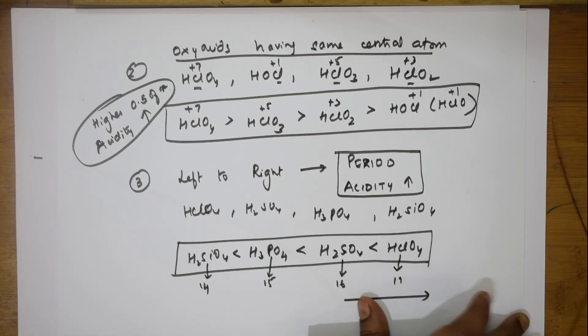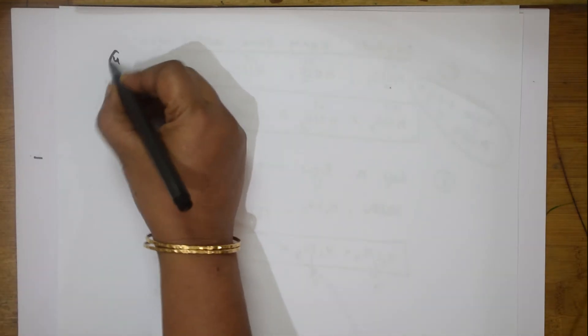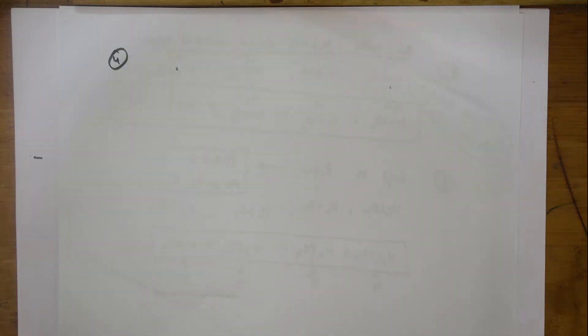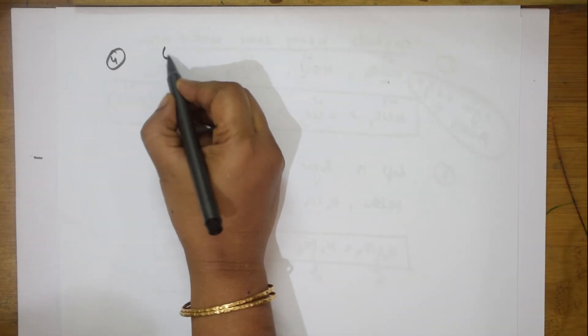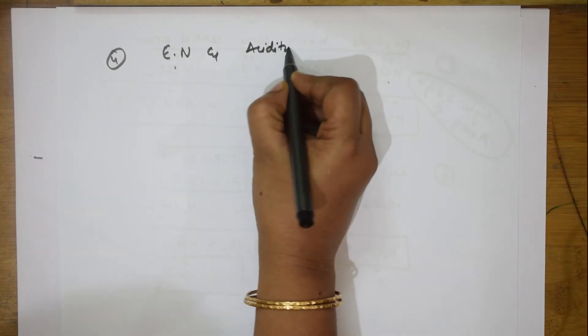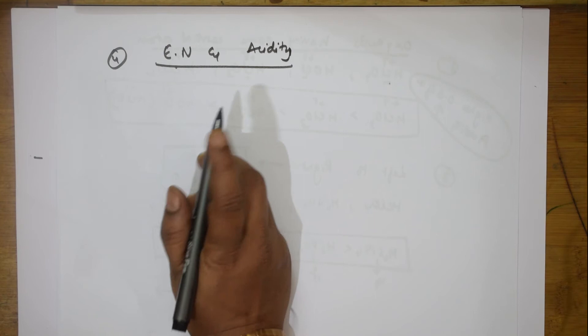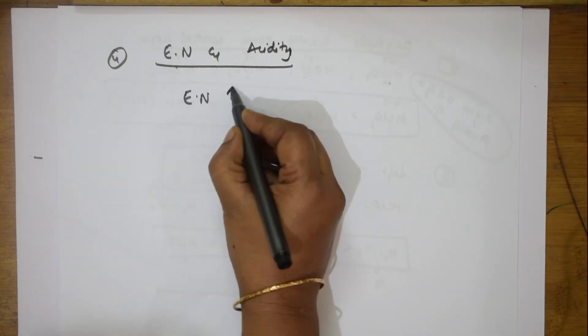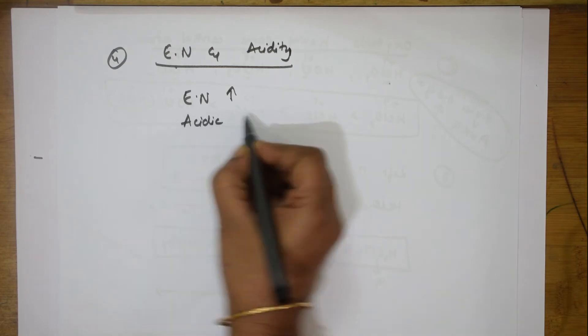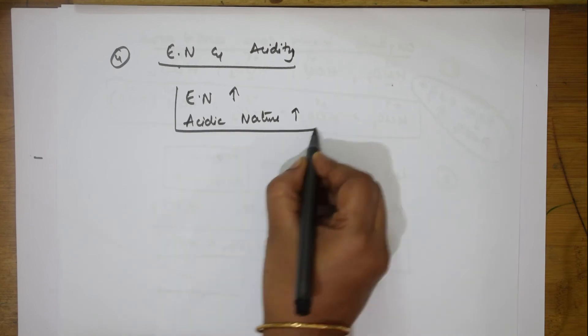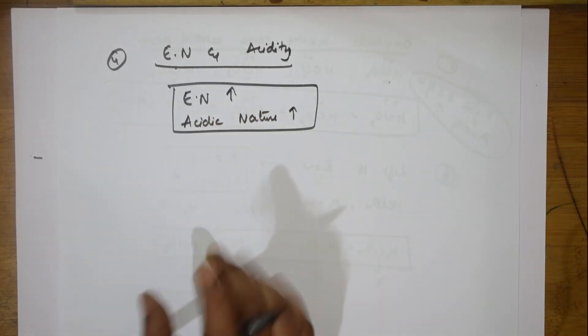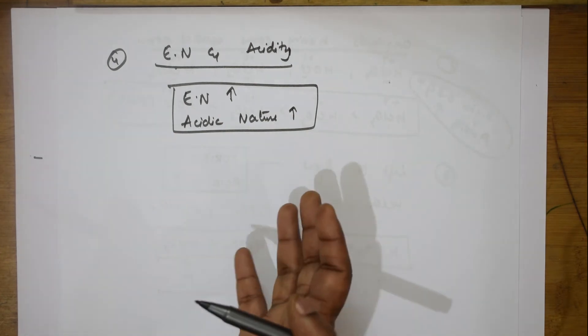Now if they give you a combination of oxy acids with different halogens, we relate electronegativity and acidity. The key concept is: as electronegativity increases, acidic nature also increases. This is related to the electron-withdrawing group effect — more electronegative atom attached means higher acidity.